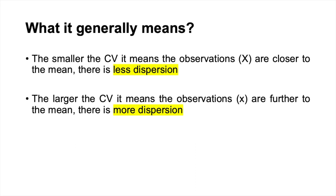For example, if we have a stock price collected from Monday through Friday, and the daily changes in the stock price are small, then when we calculate the coefficient of variation, the value will also be small because there is less dispersion of the values.